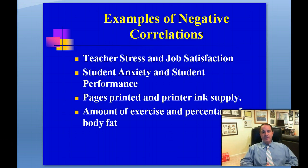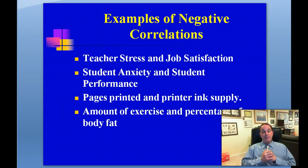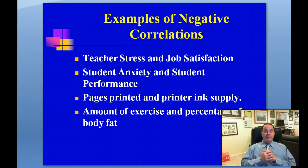Examples of negative correlations include teacher stress and job satisfaction — as teacher stress levels go up, job satisfaction goes down. Student anxiety and student performance — as anxiety levels go up, performance tends to go down. Pages printed and printer ink supply — as pages printed go up, ink supply goes down. And amount of exercise and percentage of body fat — the more exercise people do, the less body fat they have.